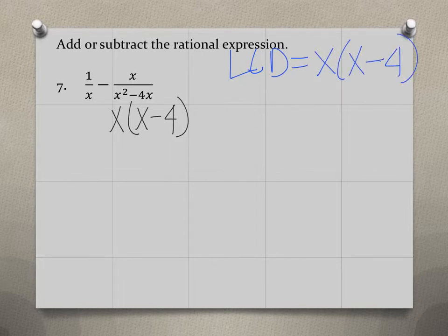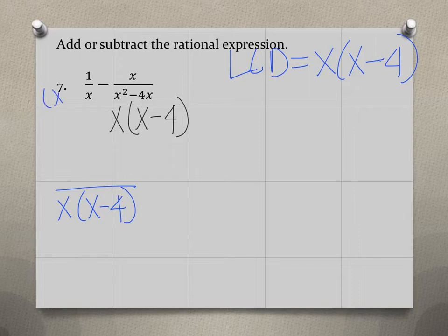So in order to get a common denominator of x times x minus 4, in the first rational expression, we just need to multiply it by x minus 4. If we multiply the top and bottom by x minus 4, in the bottom we'll have x times x minus 4, and at the top we'll just have x minus 4.